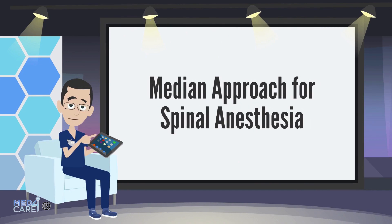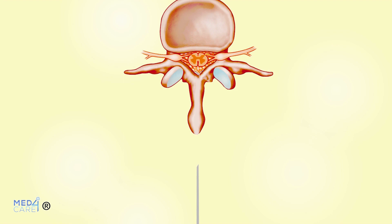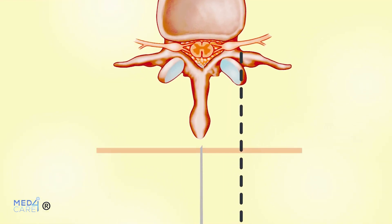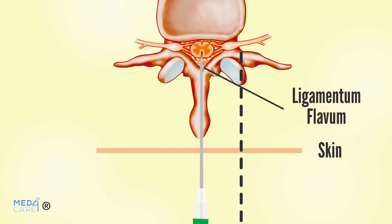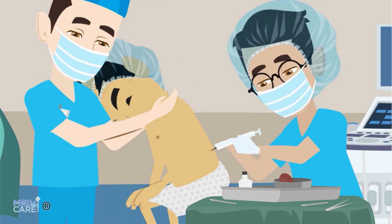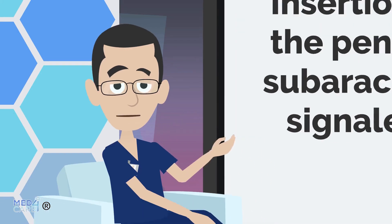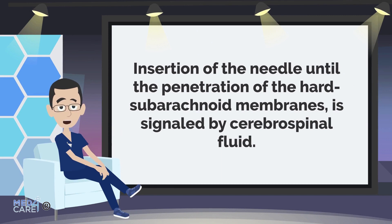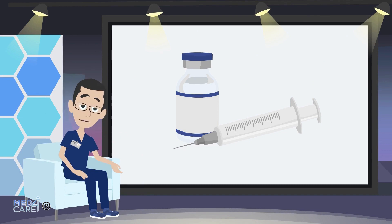Median approach for spinal anesthesia: in the median approach, the spinal approach to the intrathecal space is the midline with a straight-line framing. After infiltration with lidocaine, the doctor introduces the spinal needle into the skin, slightly angled. As the needle slides deeper, it will engage the supraspinous ligament and then the interspinous ligament, noticed as an increase in tissue resistance. Then there will be the ligamentum flavum, presenting itself as a pop. Passing through this ligament leads to the epidural space. For spinal anesthesia, the doctor proceeds until penetration of the dura and subarachnoid membranes, signaled by cerebrospinal fluid, at which point administration of spinal drugs takes place.